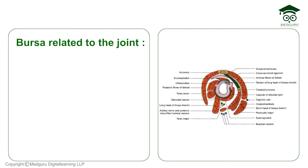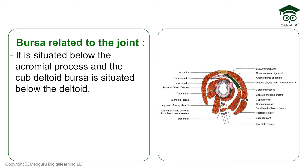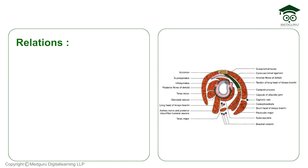Now let's go to the bursae related to the joint. A bursa is a soft structure which prevents friction. There are three bursae: the subacromial and subdeltoid bursa, the subscapularis bursa, and the infraspinatus bursa. The subacromial and subdeltoid bursae are most often continuous and are collectively called the subacromial bursa, located between the coracoacromial ligament and the supraspinatus tendon, preventing friction.